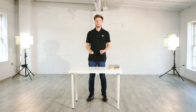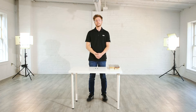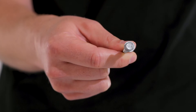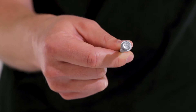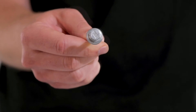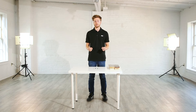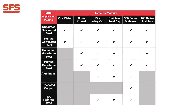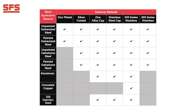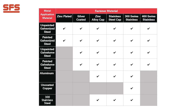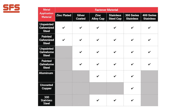One of the first things you want to consider is the material of the fastener. This is an important decision to avoid corrosive damage on your application. SFS offers fasteners in a variety of different materials including carbon steel, stainless steel capped, zinc aluminum capped, and full stainless steel. In order to select the right fastener, you need to consider the material of the application, as certain fastener materials are incompatible with certain panel materials. Use the chart on screen to determine which fastener your specific panel is compatible with.